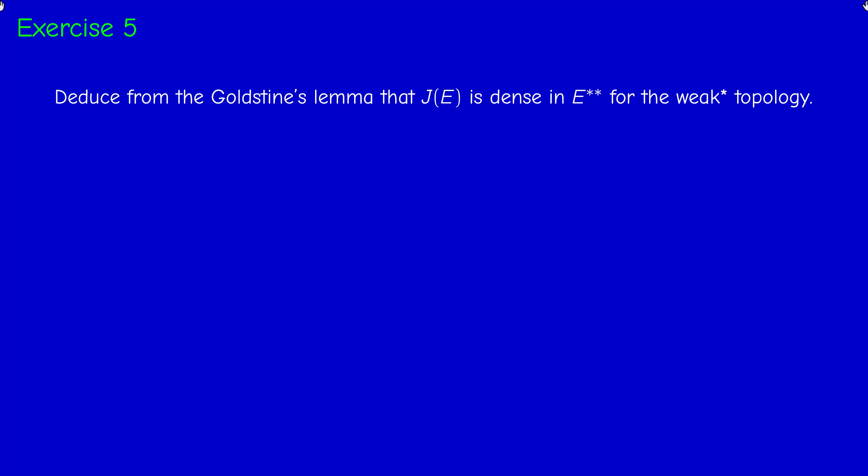The Goldstein Lemma states that the image under J of the closed unit ball of E is dense in the corresponding closed unit ball of the bidual. So we have to deduce that the image of the whole space is dense in the bidual. This essentially follows from the linearity of J.